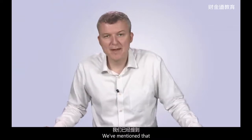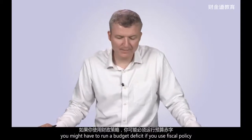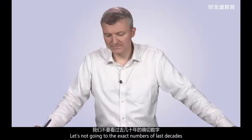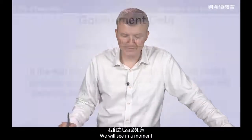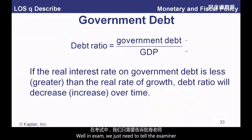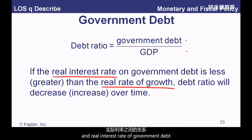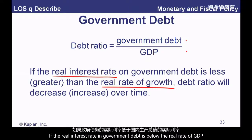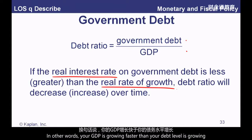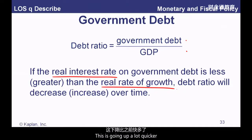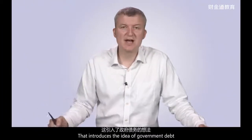Now a little bit about government debt. If you use fiscal policy you may have to run a budget deficit. We look at the debt ratio: government debt over GDP. The key relationship is between the real rate of growth of GDP and the real interest rate on government debt. If the real interest rate on government debt is below the real rate of GDP growth, that debt ratio will decrease — your GDP is growing faster than your debt level, so the ratio falls.